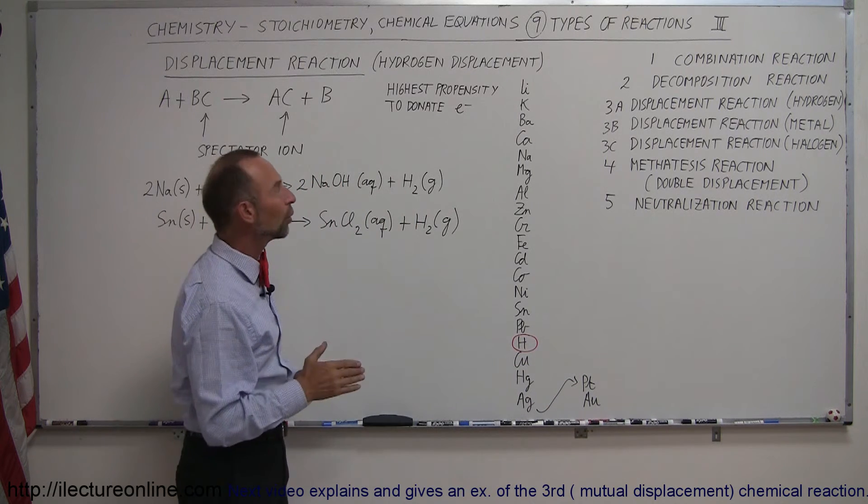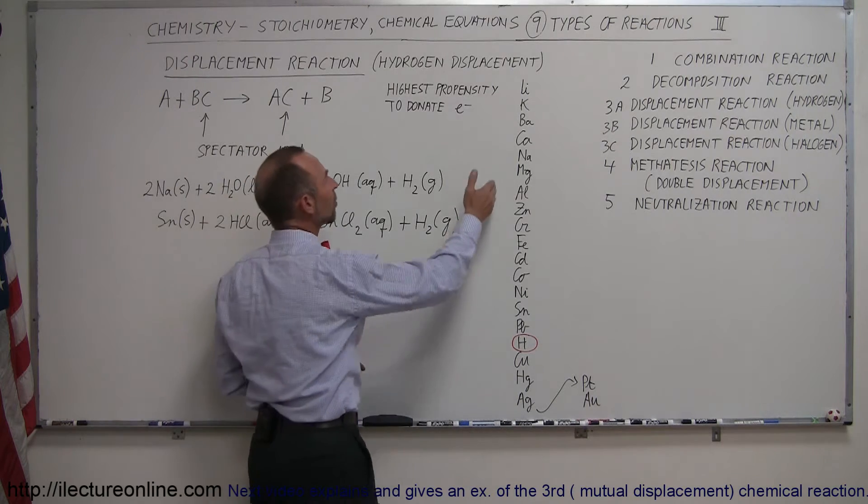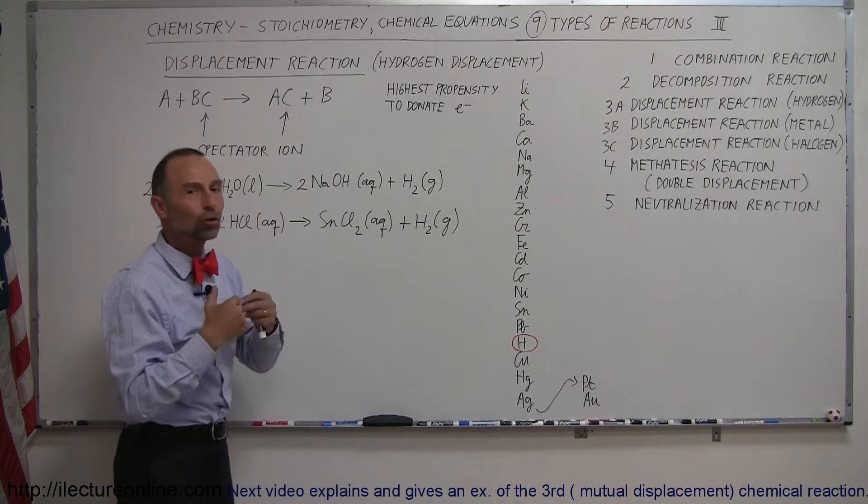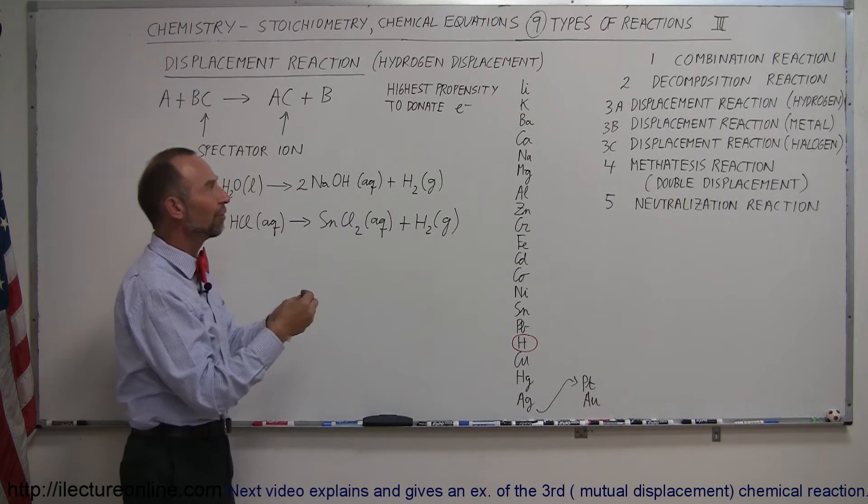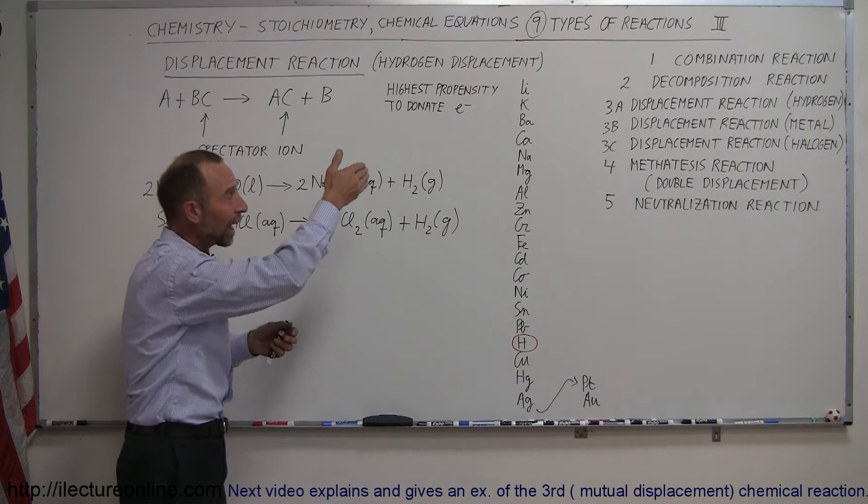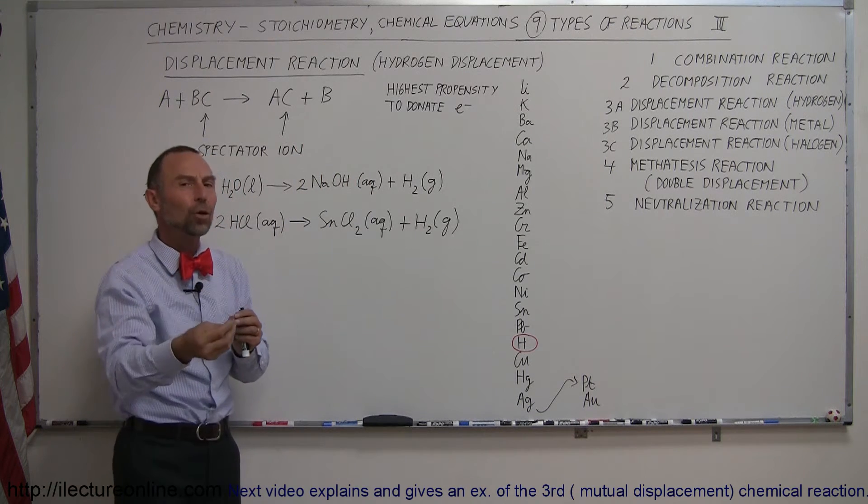But they're placed in an order in such a way that the ones at the top have what we call the highest propensity. They're the most likely to donate an electron. So lithium will very easily donate electrons, so will potassium, so will barium. But as you go down the list, they're less likely to donate an electron.